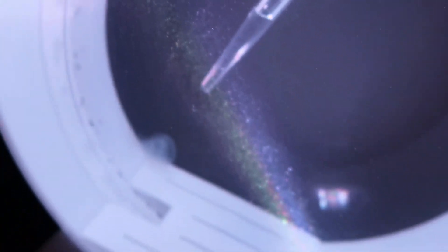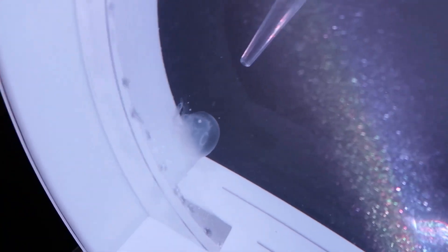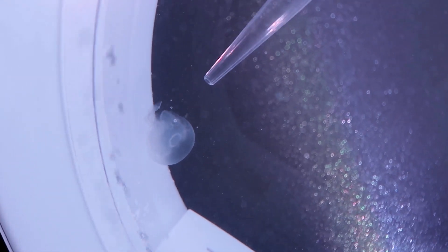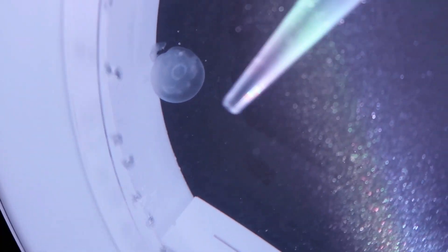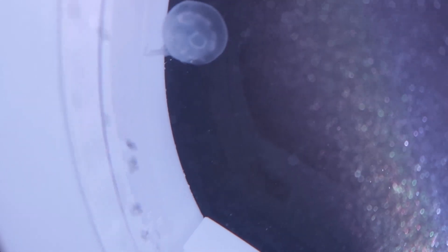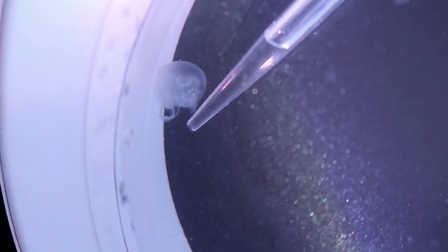So the reason you don't want the air bubbles in there is it's going to damage his bell, because that bubble is going to want to escape, so it's going to create a hole in your jellyfish, and you really don't want that.